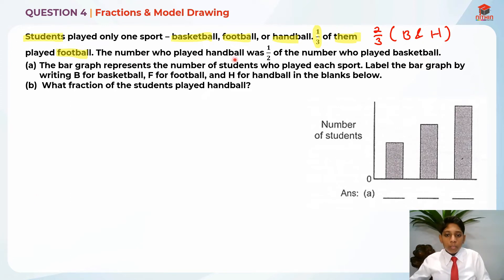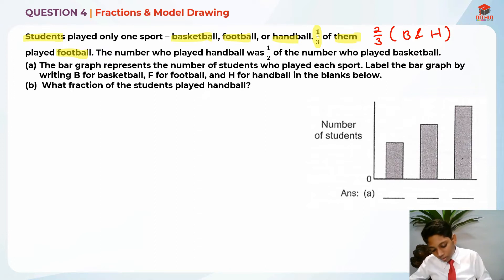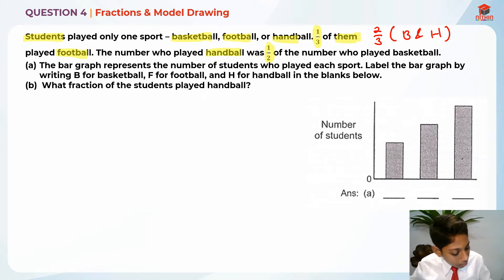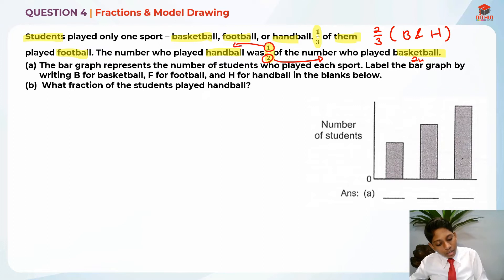The number who played handball was half the number who played basketball. You can see that handball is only half of basketball, which means basketball is two units and handball is one unit. So basketball is two units and handball is one unit.